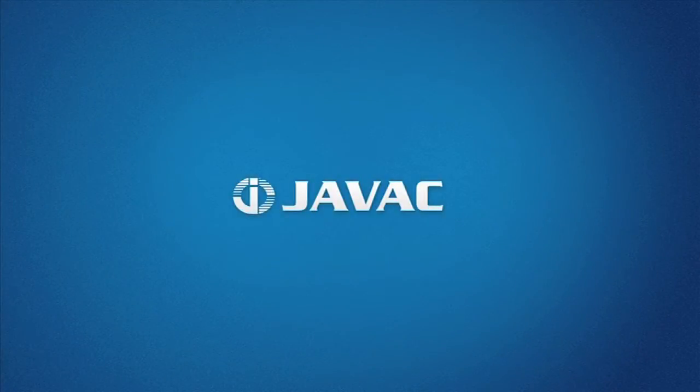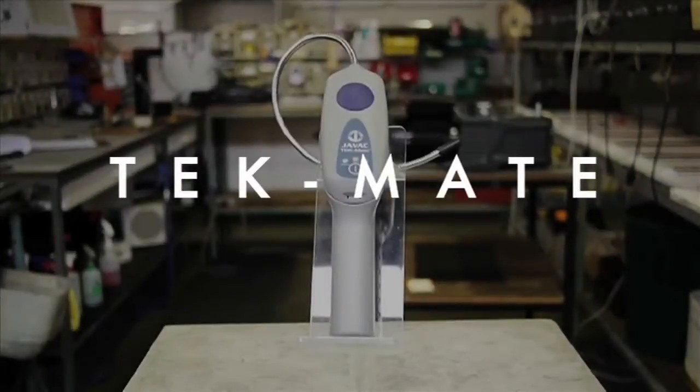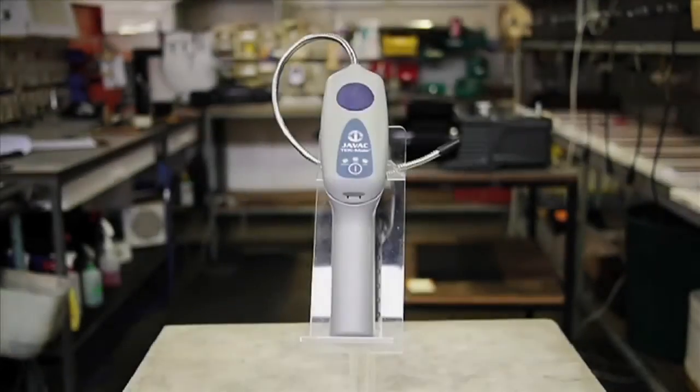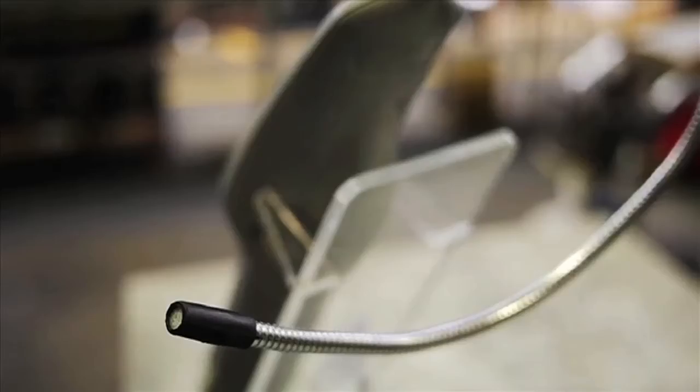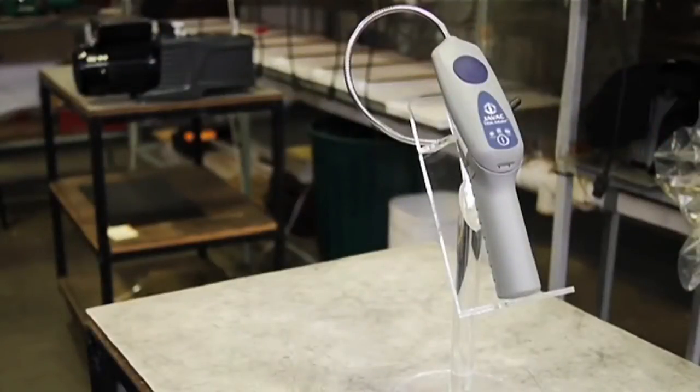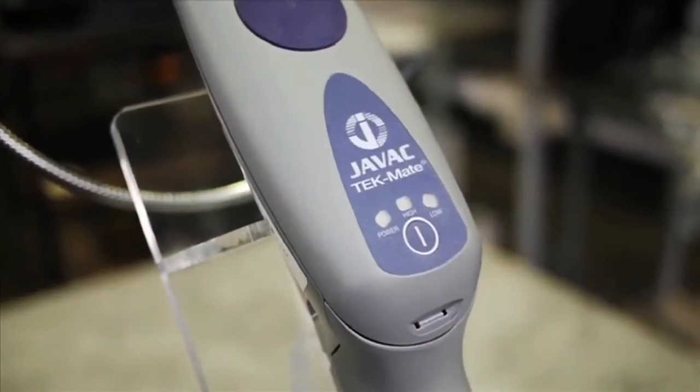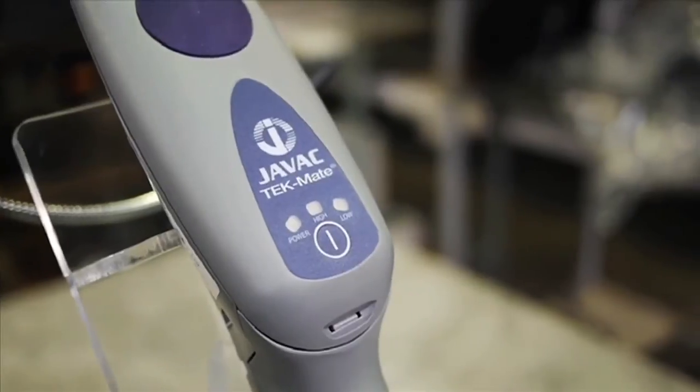This product guide on the Techmate leak detector is brought to you by JVAC. The JVAC Techmate leak detector is a handheld, highly capable leak detector for domestic, automotive and refrigeration use. The Techmate leak detector combines usability with simplicity to provide you with a cost-effective leak detector that's more than suited for the job at hand.